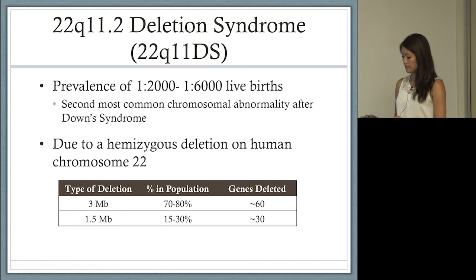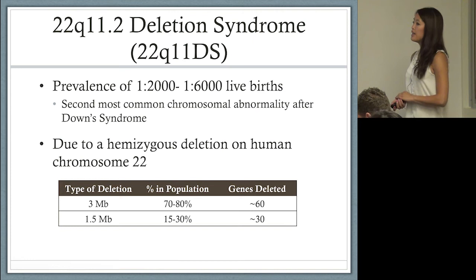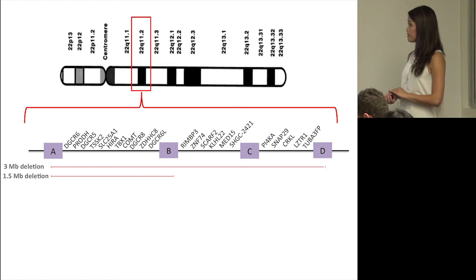It's due to a hemizygous deletion on human chromosome 22. The majority of individuals have a three megabase deletion that encompasses about 60 known genes. A smaller number have a nested 1.5 megabase deletion with around 30 genes, and the rest have atypical deletions throughout the 22q region.